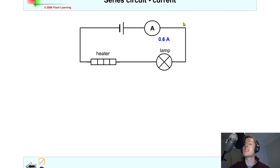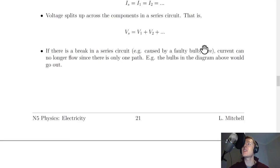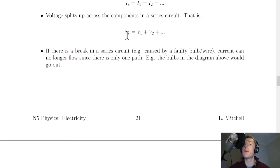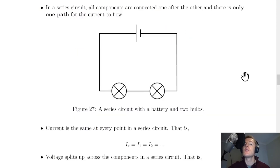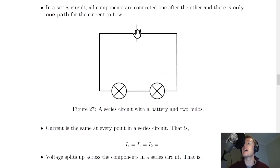At all points in a series circuit the current is the same — that's our first rule. The second rule is that voltage splits up across the components in a series circuit. That is, the voltage across the supply — the battery — is equal to V1 plus V2, and so on. Looking at the circuit diagram, the voltage across each component must add up to give the supply voltage.